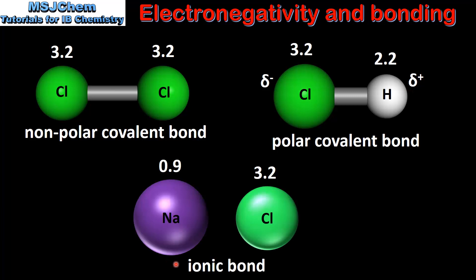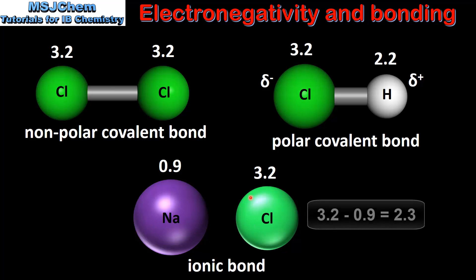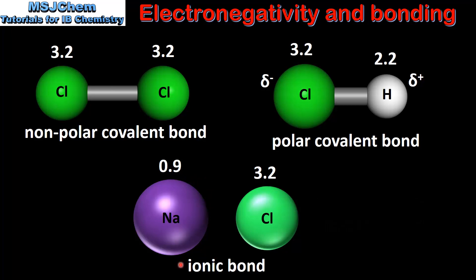And finally we look at an ionic bond. In this example we have sodium and chlorine. By looking at the electronegativity values we can see that we have a difference of 2.3 units, which results in an ionic bond between the two ions.